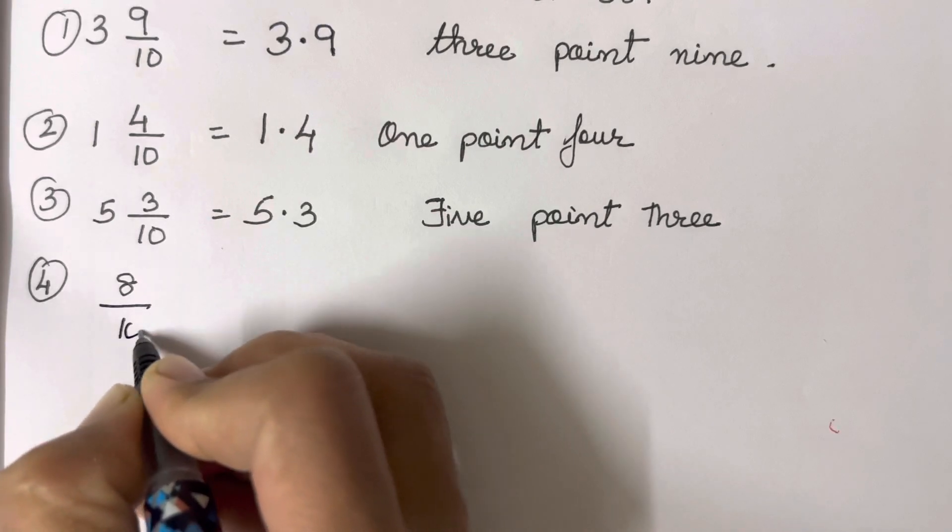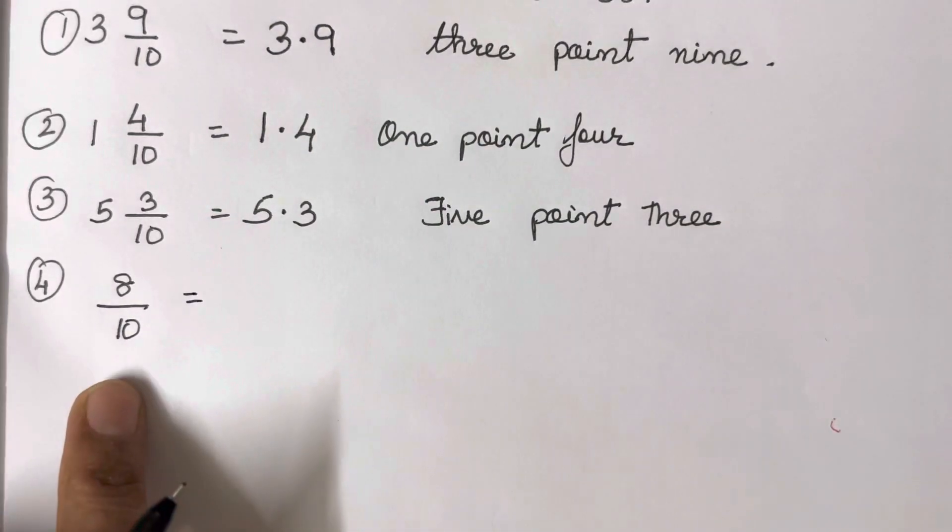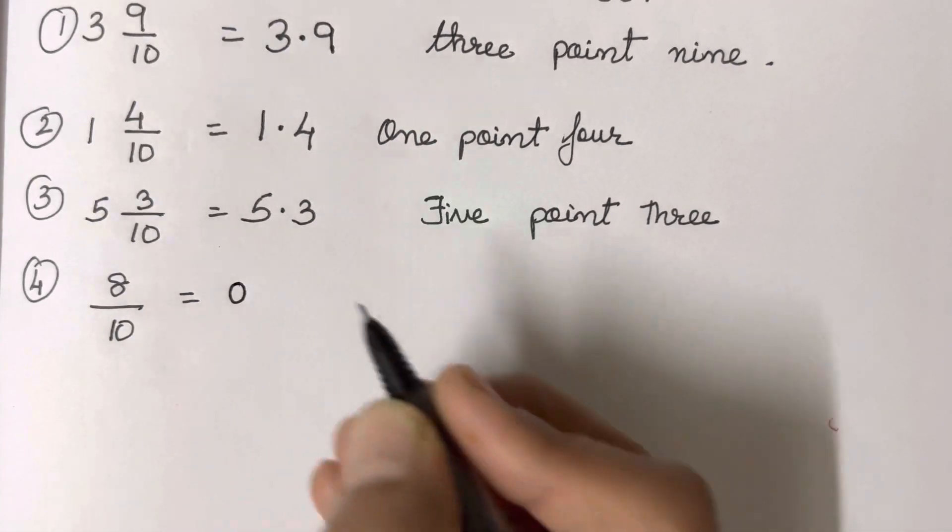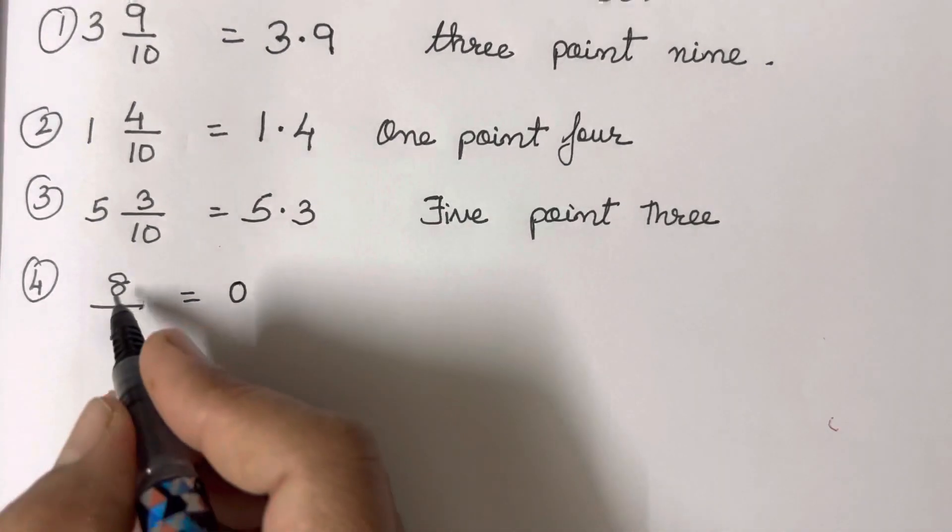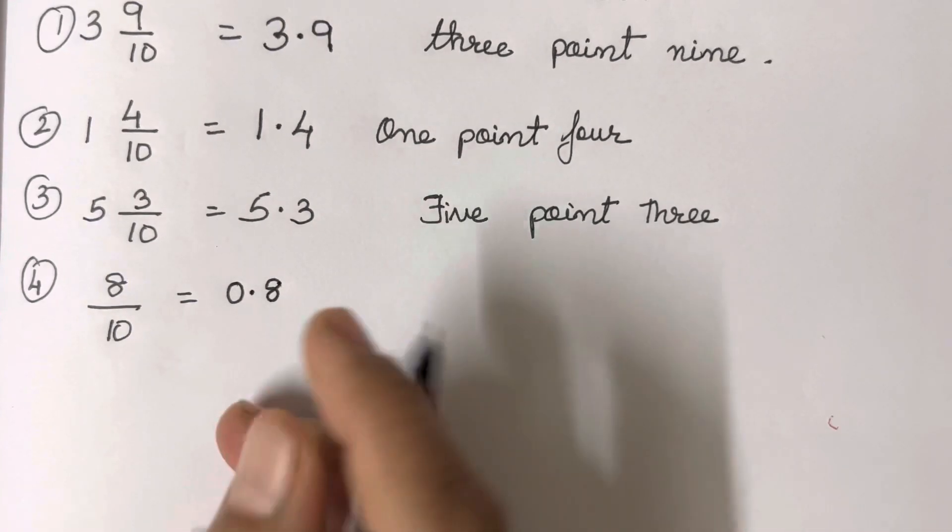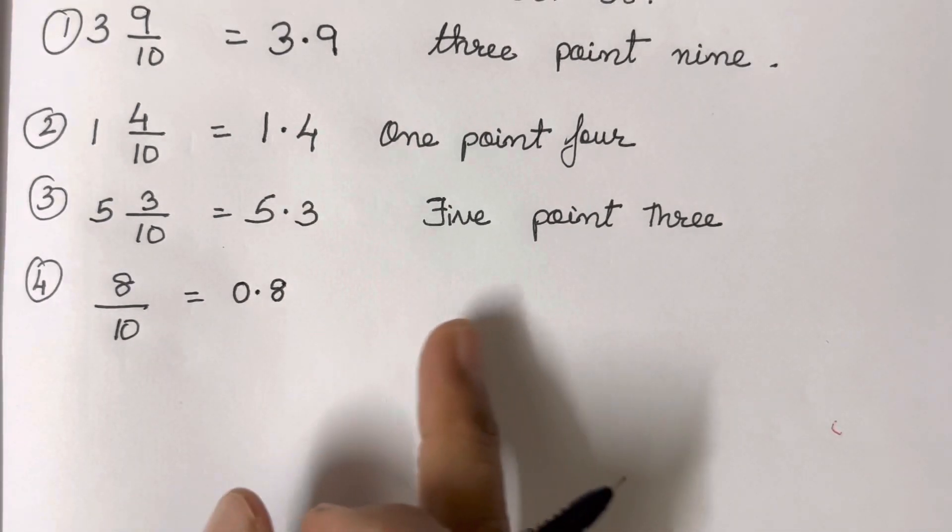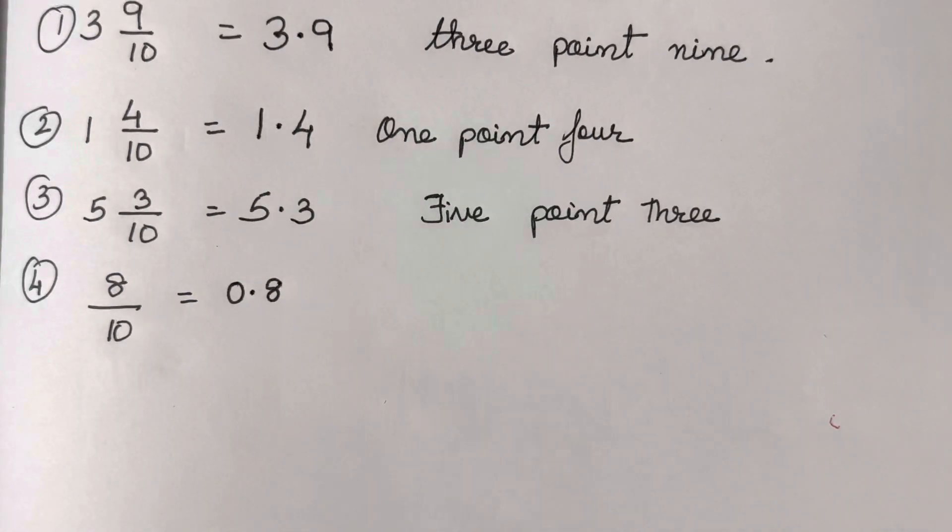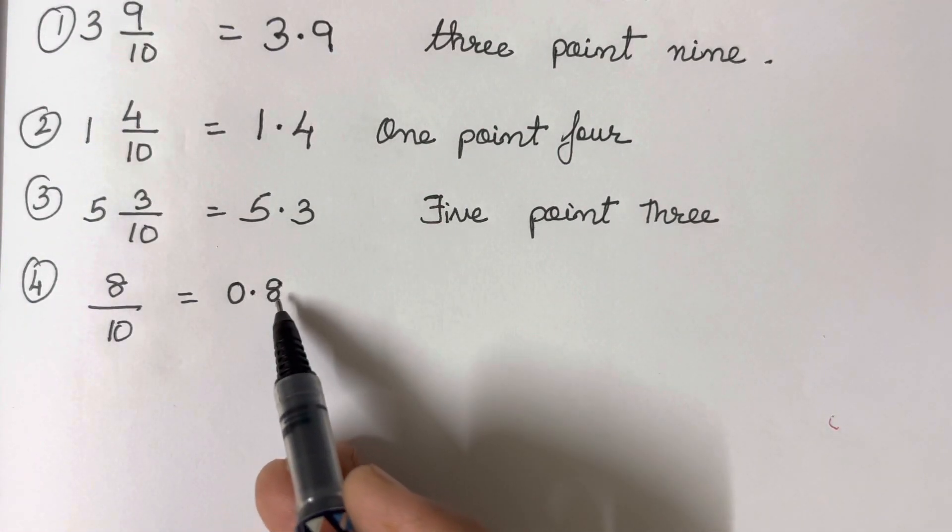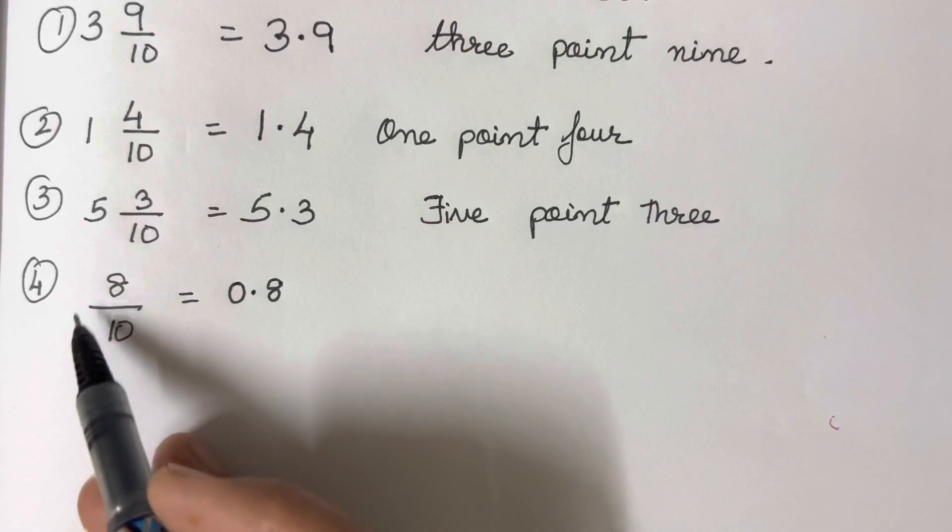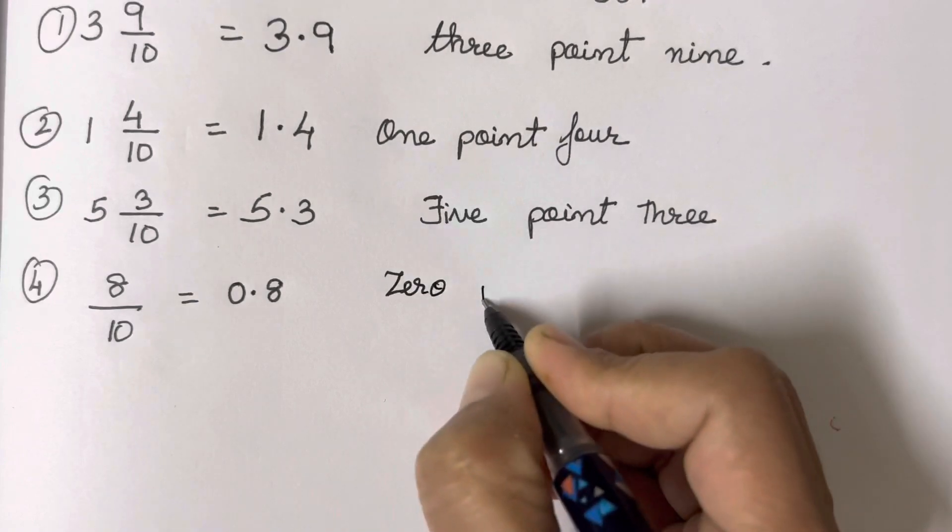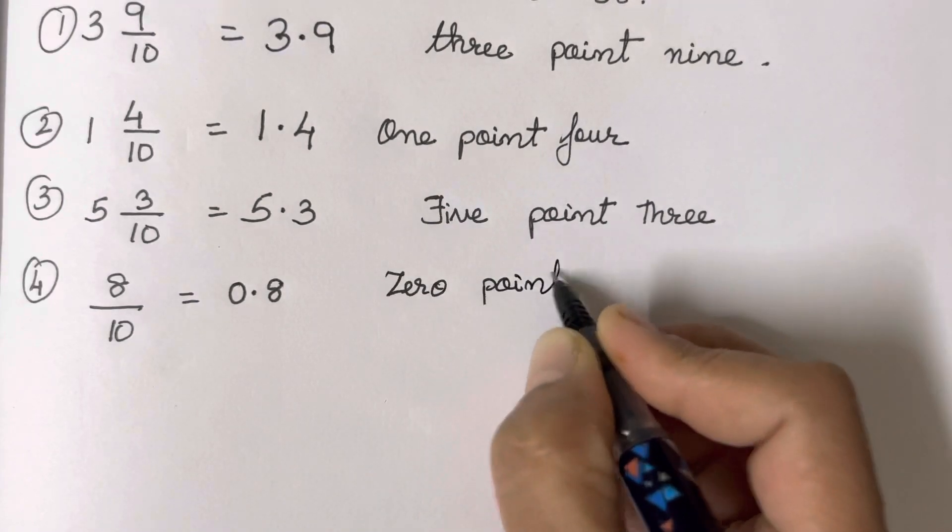Now 8 upon 10. This over here, many of you are going to make mistakes. Now over here no number has been given, so how are you going to read this? 0.8. Zero point eight.